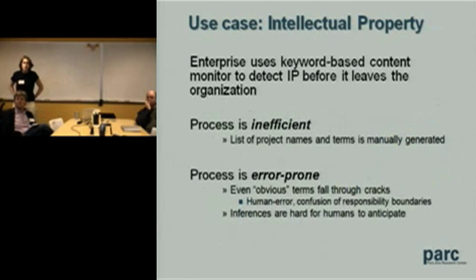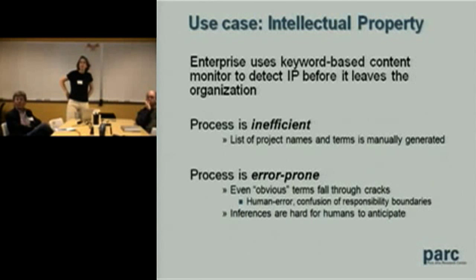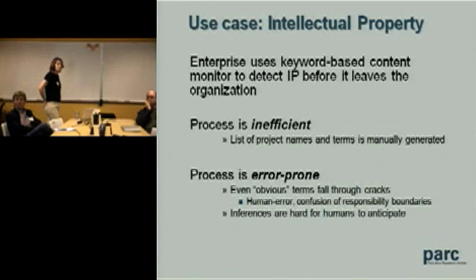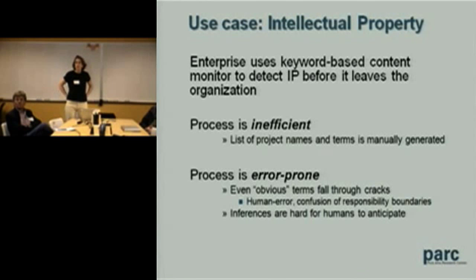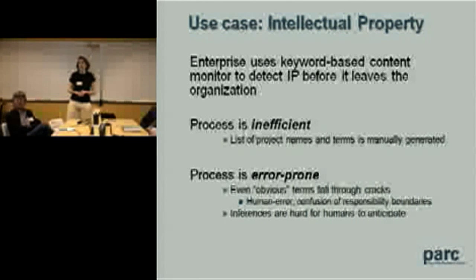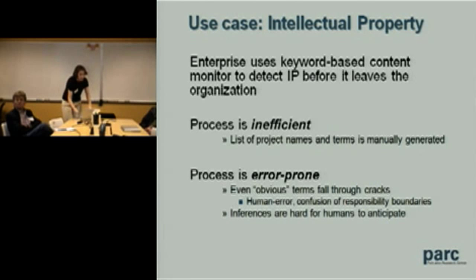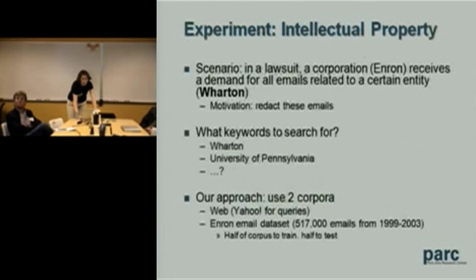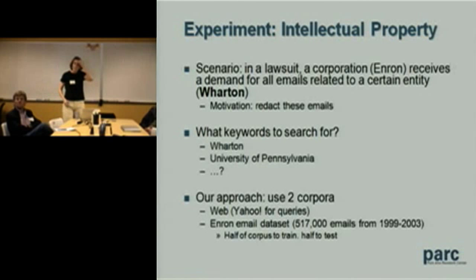One other experiment demonstrates when you might not want to rely exclusively on the web. A lot of folks are concerned about intellectual property leaking out of organizations. When we talked to people dealing with this process, they were pretty much doing it all manually — trying to list all the companies they were negotiating with, new products under development, and using that to flag emails leaving the organization. We wanted to simulate this type of setting and understand how our technique could potentially help.